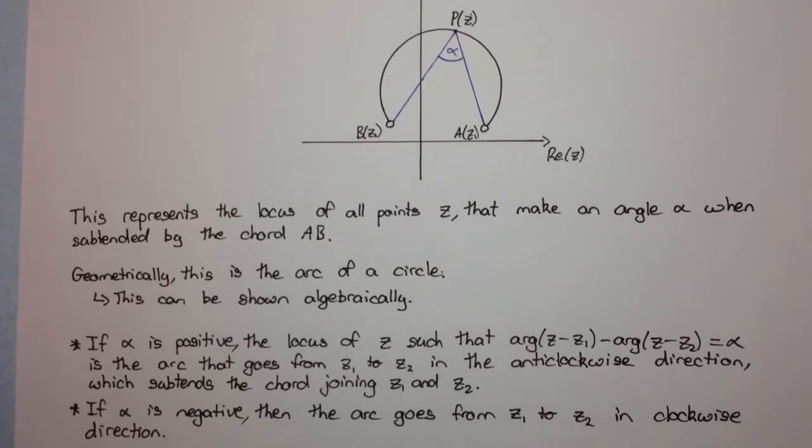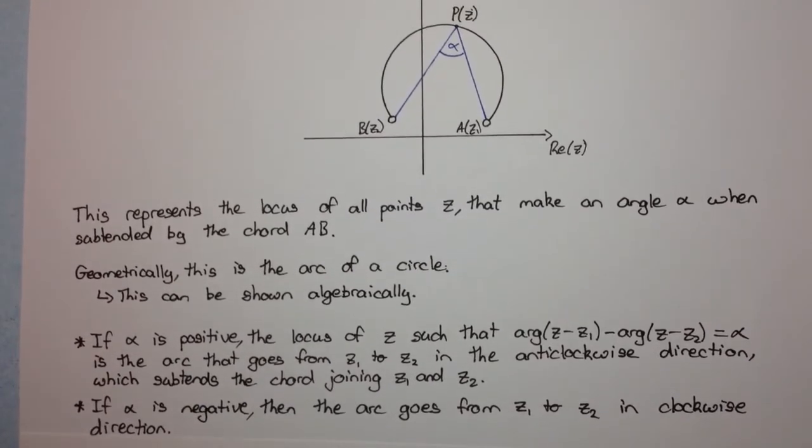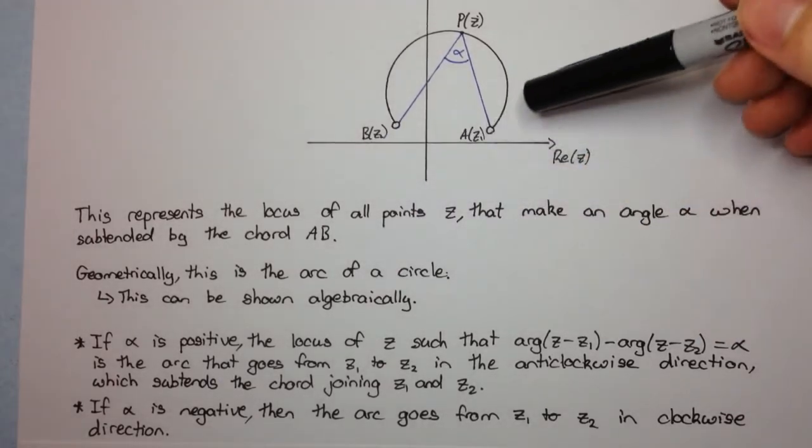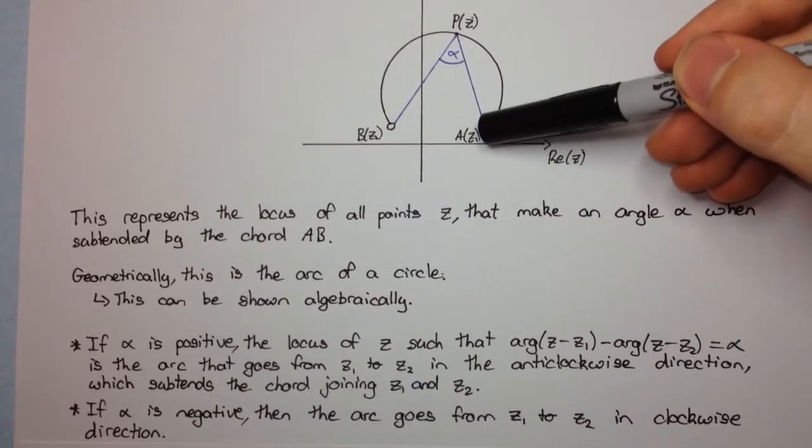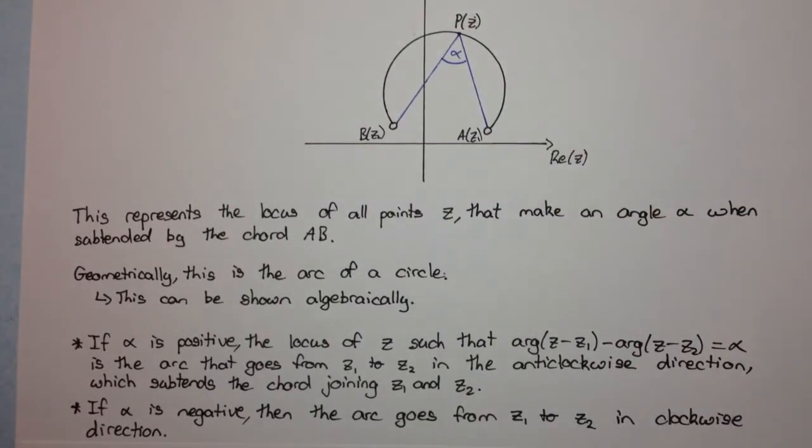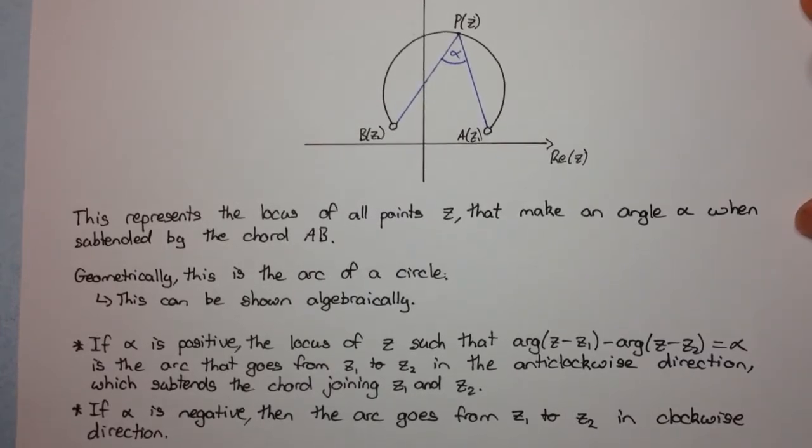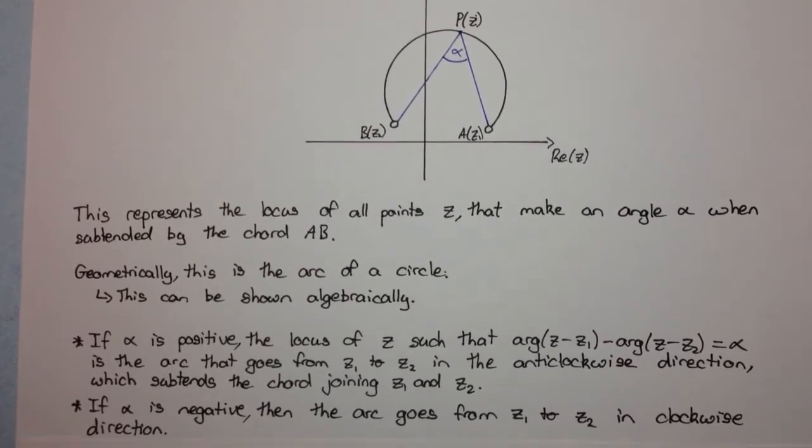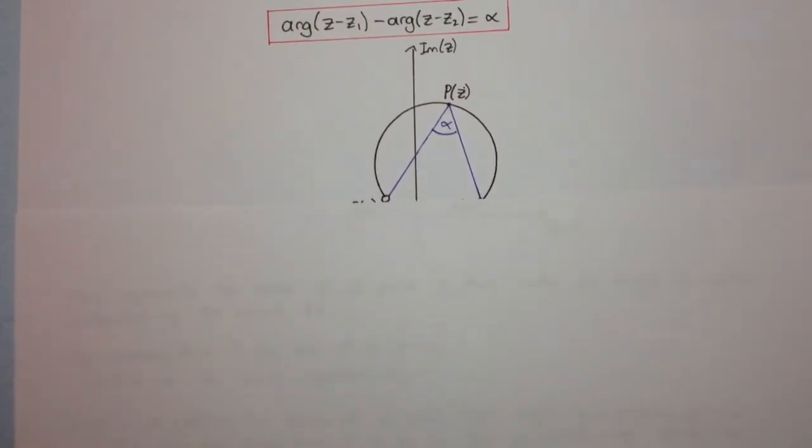Now you might ask, well, what if α is negative? Well, then it's the same thing, but the arc goes from z₁ to z₂ in the clockwise direction. So this time it'll go downwards. It'd be the minor arc in this case. Okay, and once again, this might seem all too much to just understand without seeing an example, but don't worry, you'll understand it much more when we see an example in a later video.